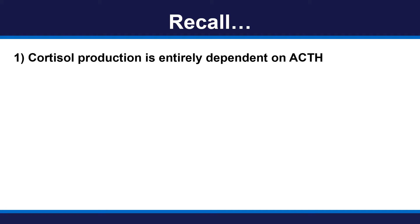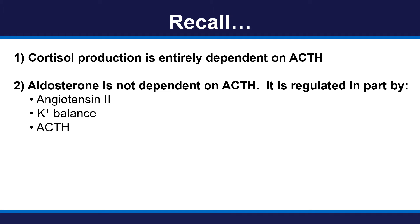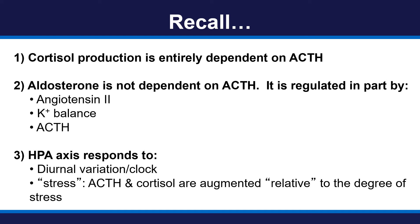Let's recall that cortisol production is entirely dependent on ACTH. While aldosterone is not dependent on ACTH, it is regulated in part by angiotensin II, potassium balance, and only in a smaller part by ACTH. The HPA axis responds to diurnal variation, and in stress, ACTH and cortisol are augmented relative to the degree of stress.